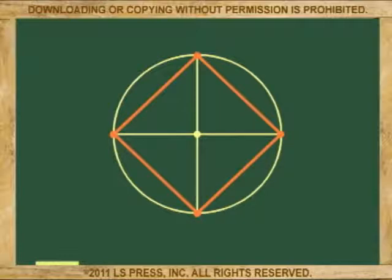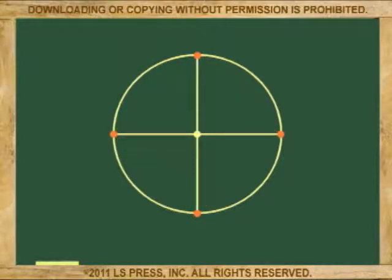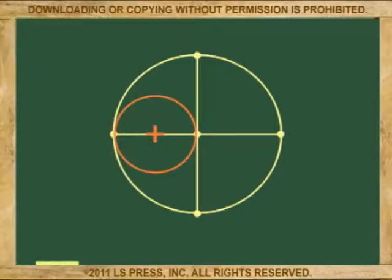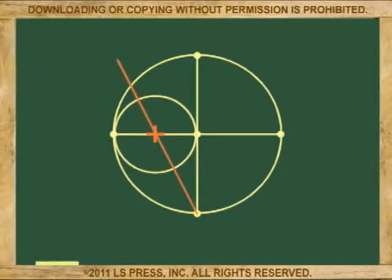The last polygon we'll construct is the pentagon. To do the pentagon, we'll go back to the original perpendicular bisecting diameters. To start the construction of the pentagon, first we have to bisect one of the radii. I selected the left radius. After bisecting the segment representing the radius, we draw a circle centering at the midpoint of the radius we just bisected, and extending to the center of the original circle. The other end of this new circle is at the left tangential point. Next, we draw a line that passes through the center of the small circle and the lower tangential point of the original circle.